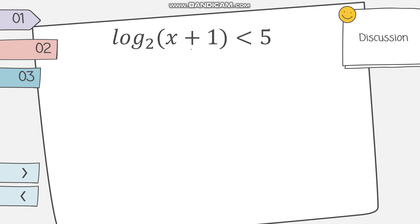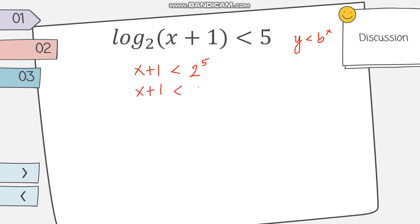For logarithms, we write the inequality into its exponential form following: y, then the symbol, then b raised to x. So for logarithm of x plus 1 base 2 is less than 5, we write the argument first: x plus 1 is less than 2 raised to 5, which is 32. Solving, we get x is less than 31.